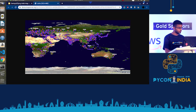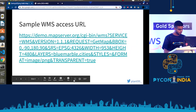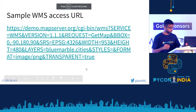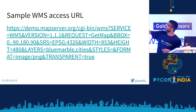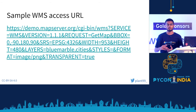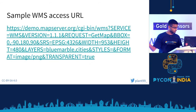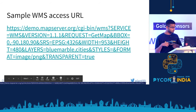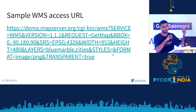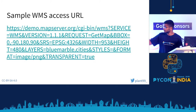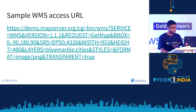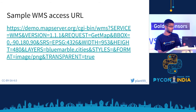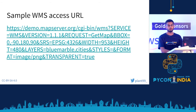Look at the components of this URL. The service is WMS — Web Map Service — which is the simplest standard. The request is GetMap. The bbox is a bounding box defined by two coordinates. SRS is the Spatial Reference System. Layers in this case are 'blue_marble' and 'cities'. We can ignore style and format for now, but format defines the image format you receive.